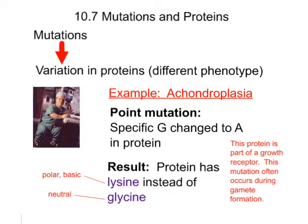Here we have an example: achondroplasia. This individual has achondroplasia, which is also sometimes called dwarfism, and that occurs because there is a point mutation — a change in a specific base. In this case, the specific change is that G is changed to A. The result is that the protein formed when that codon is read in the translation process would normally read a lysine amino acid, but instead it reads a glycine amino acid.